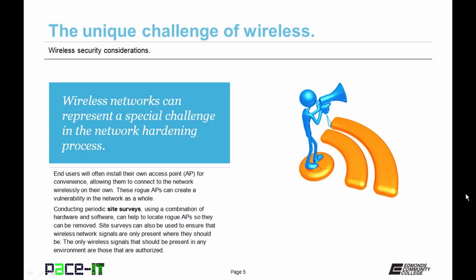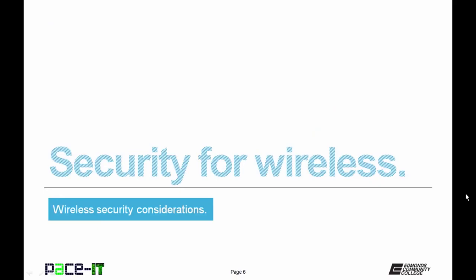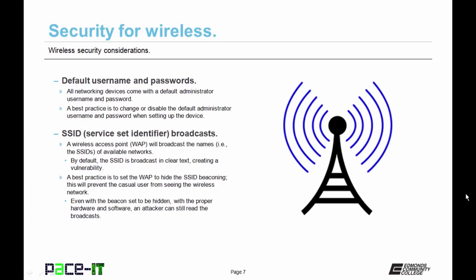Site surveys can also be used to ensure that wireless network signals are only present where they should be. The only wireless signals present in any environment should be those specifically authorized to be there. Now let's move on to security for wireless. First up is default usernames and passwords — all networking devices come with a default administrator username and password. A best practice is to change or disable the default administrator username and password when setting up the device, as these defaults are well known and represent a security vulnerability.